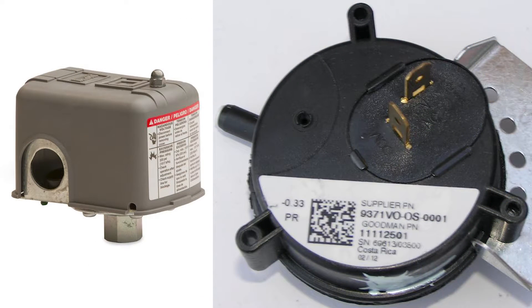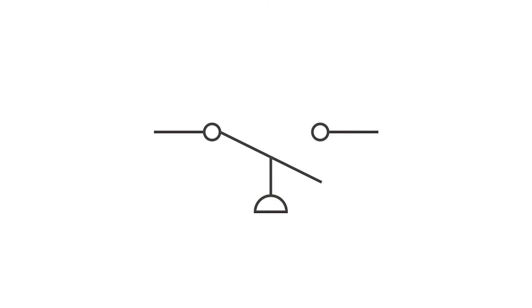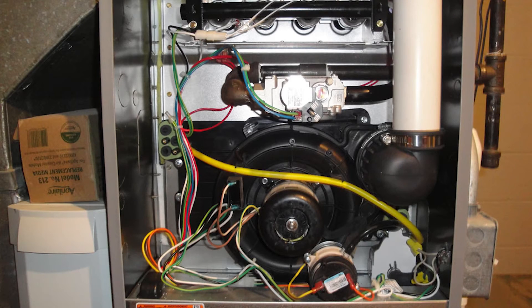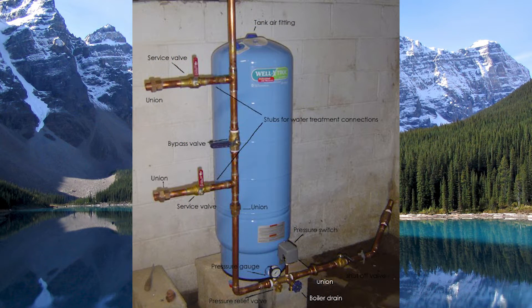And the last type of switch that we come across in the field is called a pressure switch, and this is what its symbol looks like. We can find pressure switches in a couple different scenarios. The first is on a furnace where it's actually measuring the pressure of an induced draft, or it could also be found in a well pump system to power up the pump as needed to draw well water up from the ground and put it inside the pressure tank.